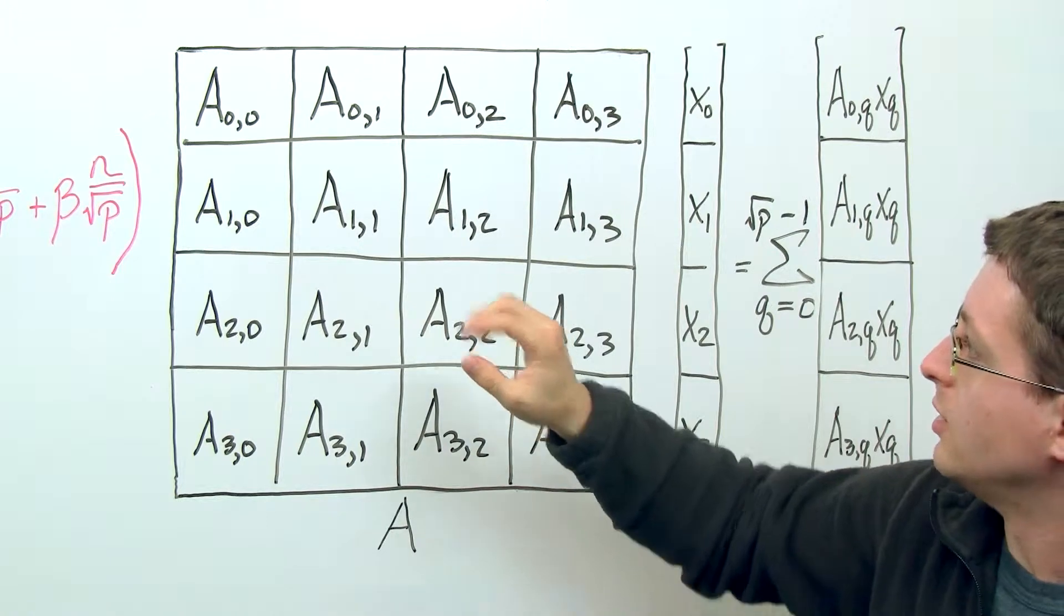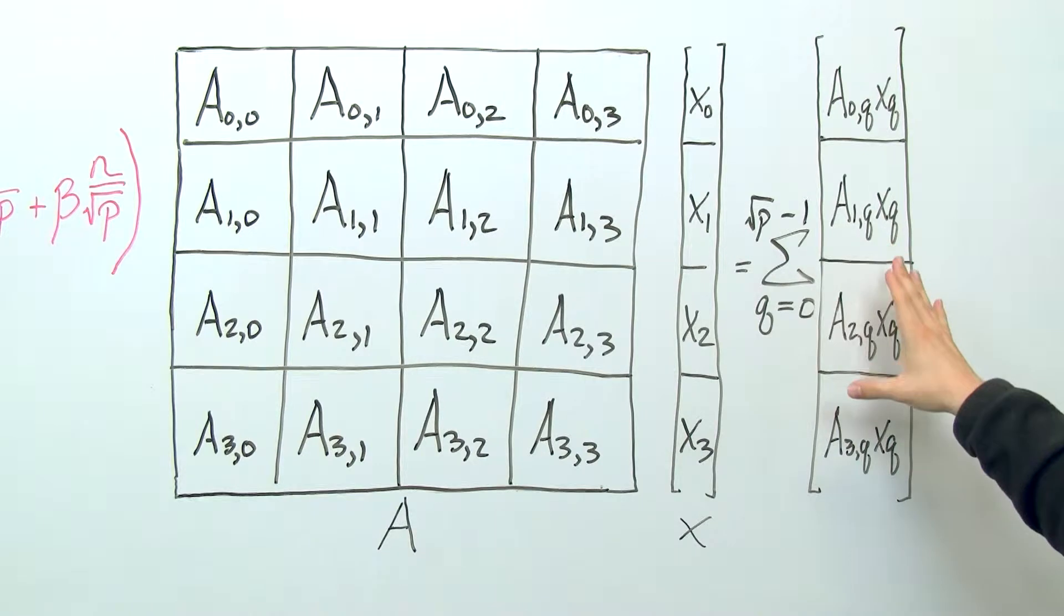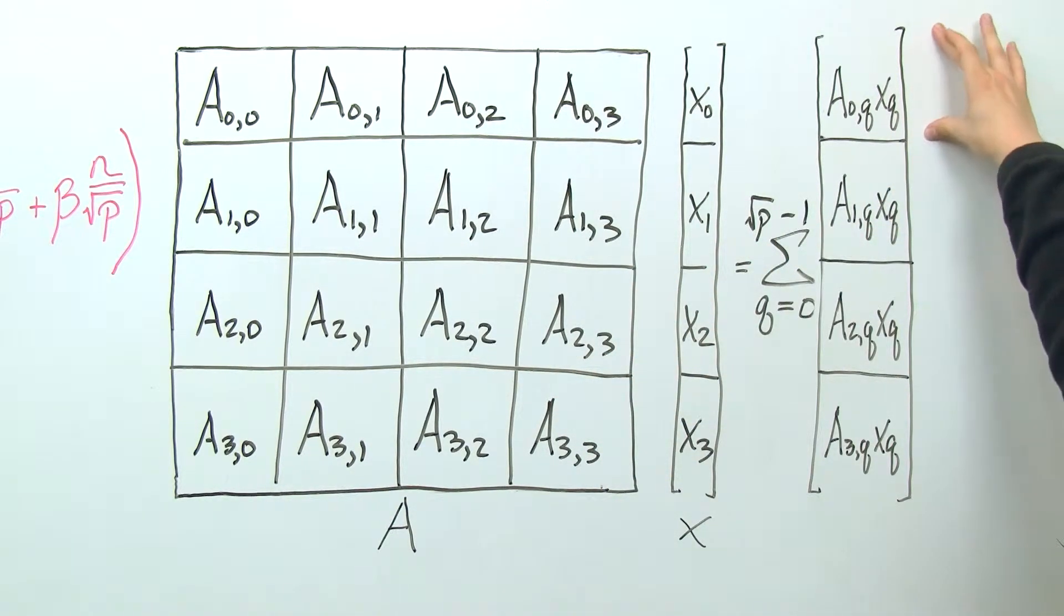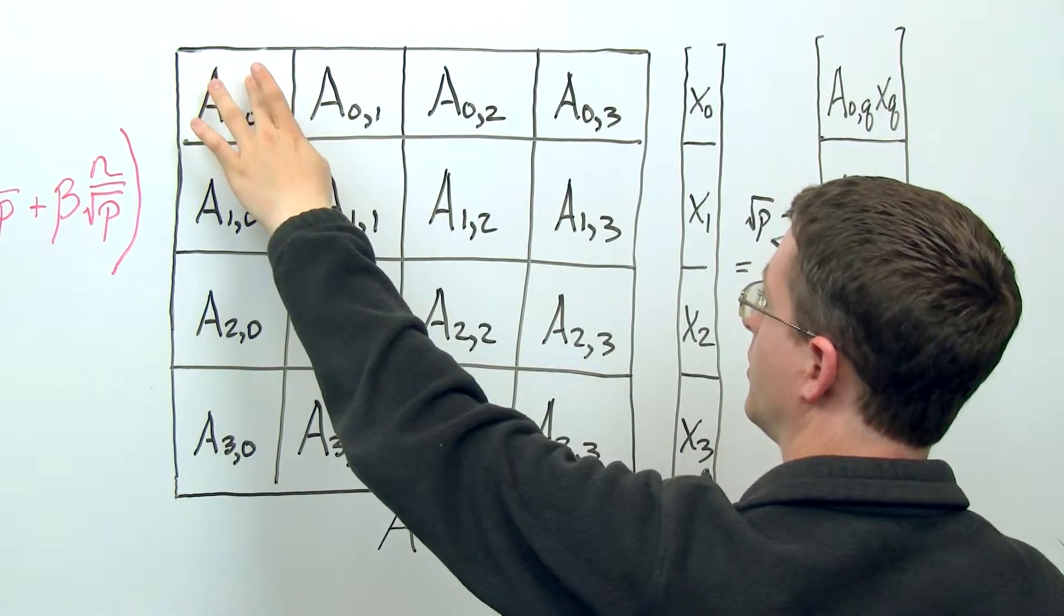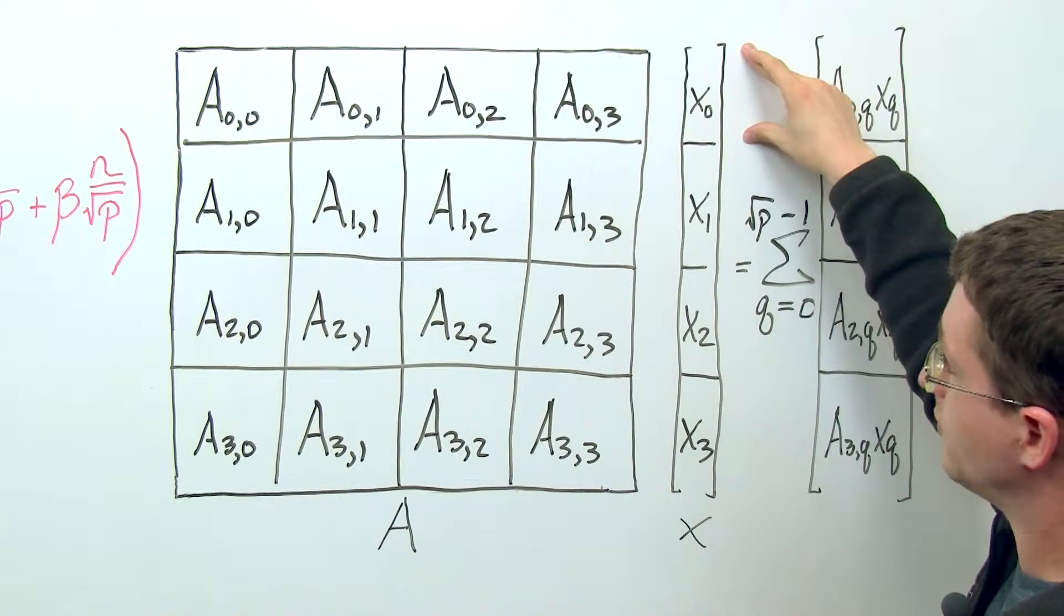So if this matrix-vector product was to be formed, then we would know that the result with this partition would look like in the first quarter of this vector, say, y equals A times x.